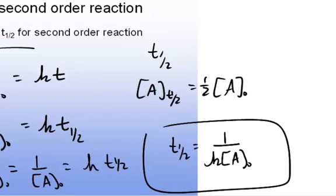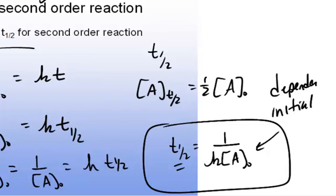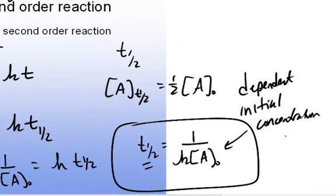For the second-order equation, the half-life is dependent on the initial concentration. This means that as the reaction proceeds, the half-life time span changes.